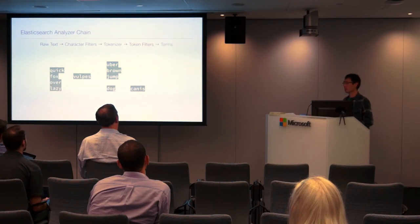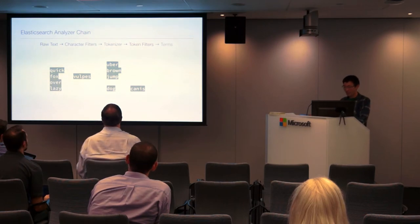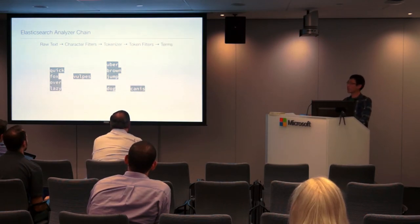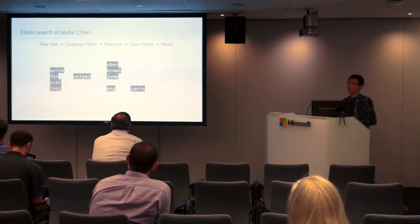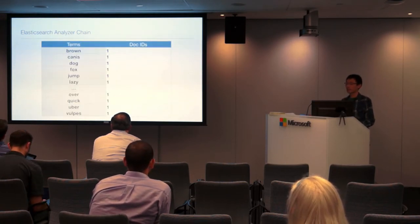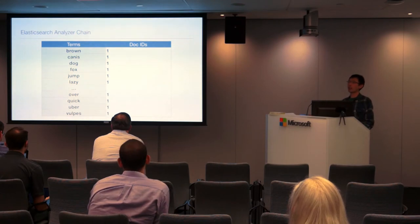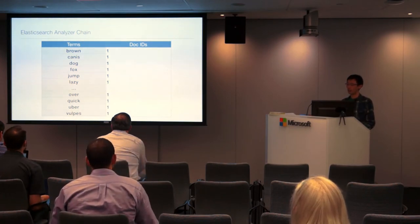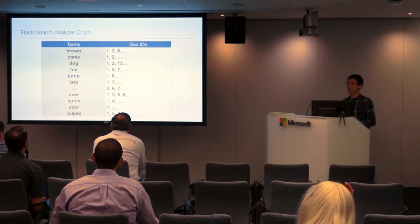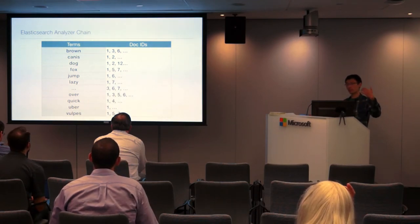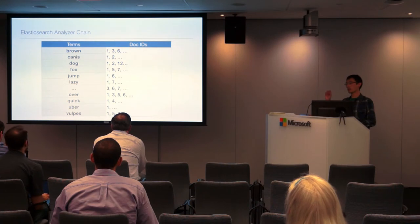That's probably enough token filters for now — you can configure any number of these. Let's say that's our set of terms. Now that we have these terms, we can build what's called an inverted index, which is basically a fancy term for a dictionary list: you have terms on one side and the document IDs that those terms appear in on the other. As you index more documents, you build up this list both in terms of number of words and which documents each word appears in.